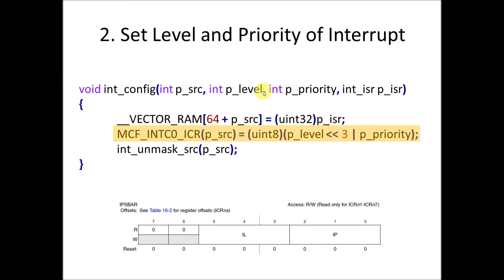To set level and priority in code, we have a macro that lets us index the interrupt control register by source number. You can look at the header files to see how it's defined — it's just an offset to a memory location. We take the interrupt level, shift it left by 3 to place it in bits 3 through 5, then OR that with the priority value to fill the lower 3 bits. This gives us a complete value we can write directly into the control register.